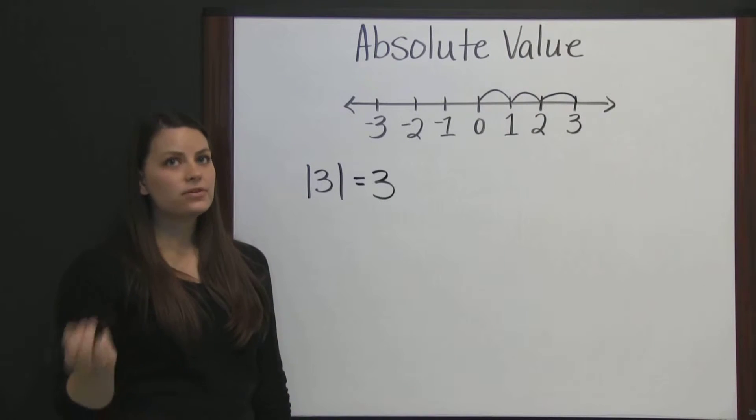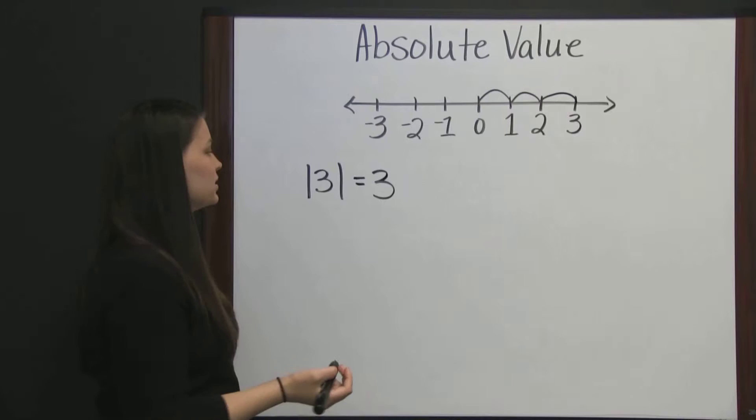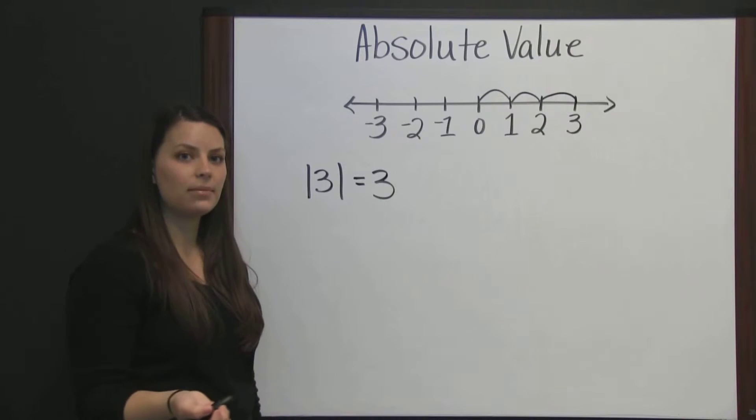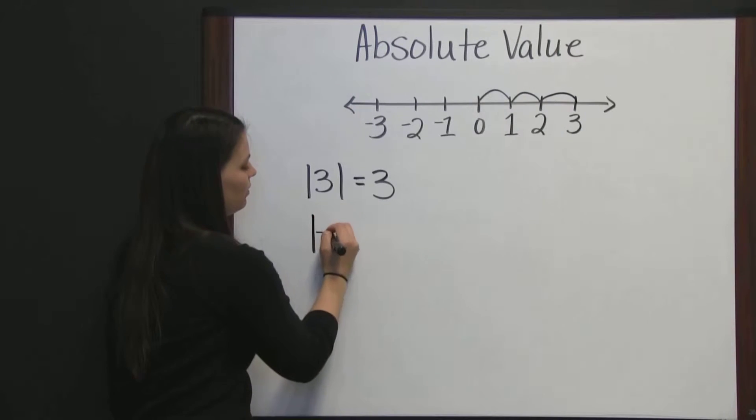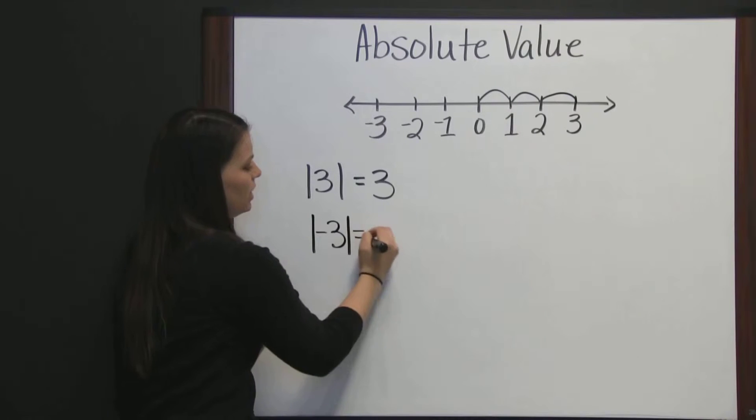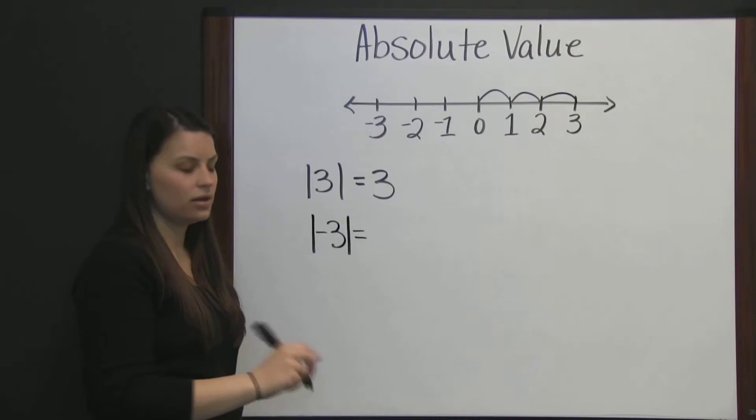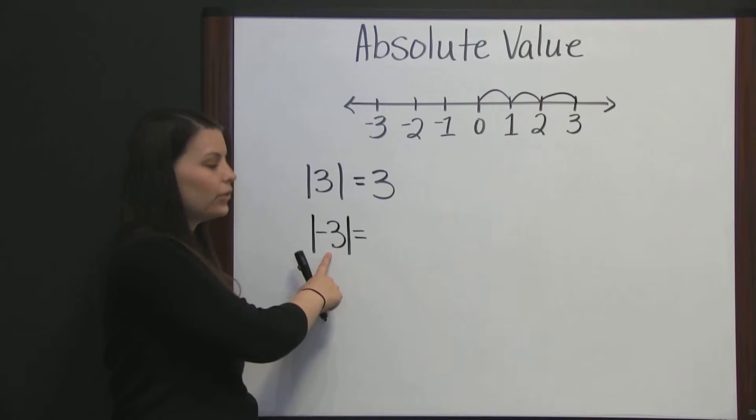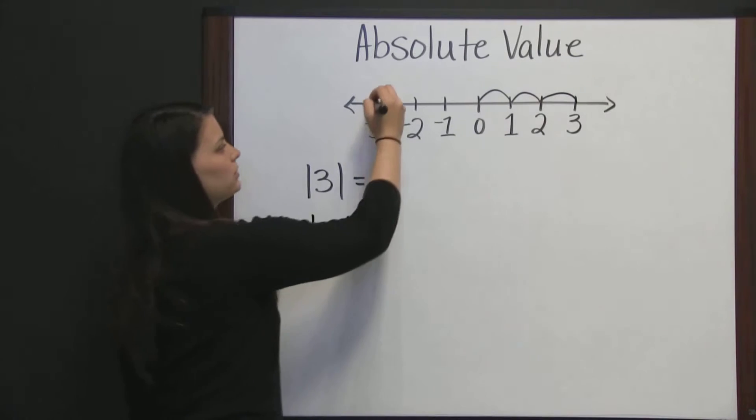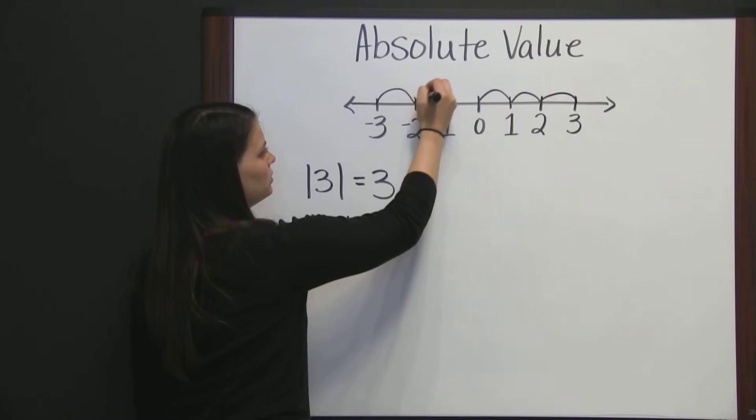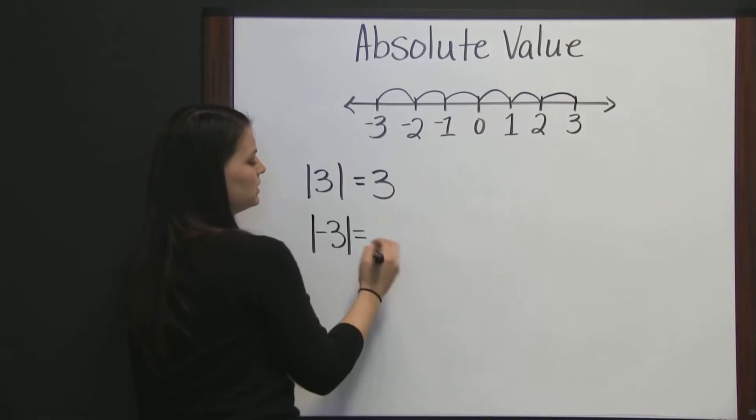The absolute value of a negative number and its positive counterpart are the same. So, the absolute value of negative three is also three, because negative three is also three places from zero. One, two, three places from zero.